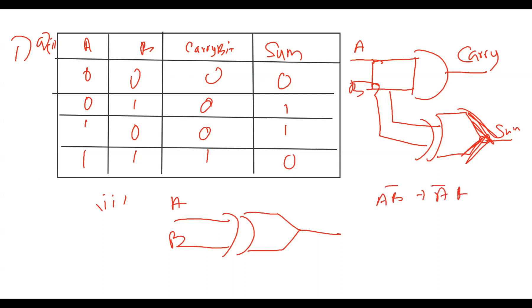So, the sum expression is derived from the bottom of the truth table. If we go to the bottom, that gives us the sum expression.